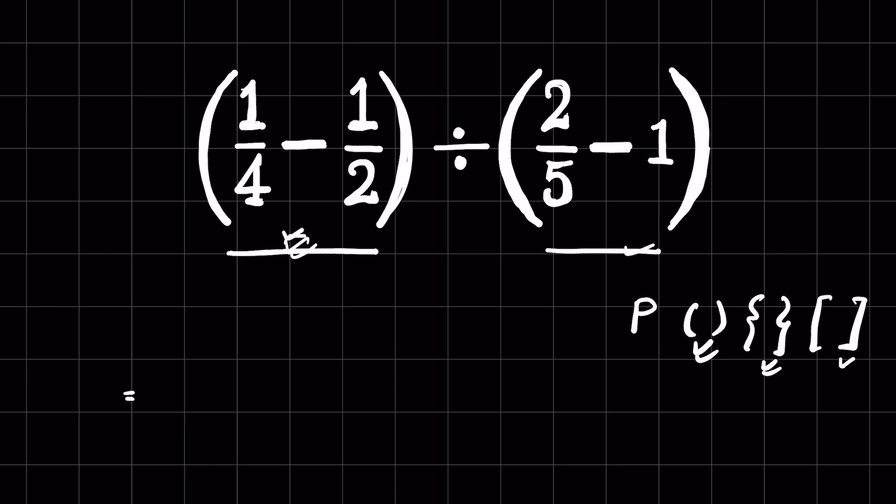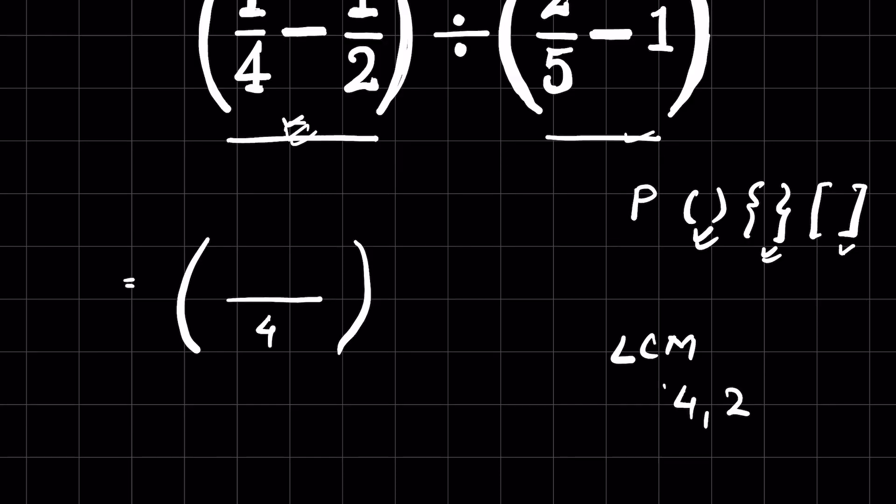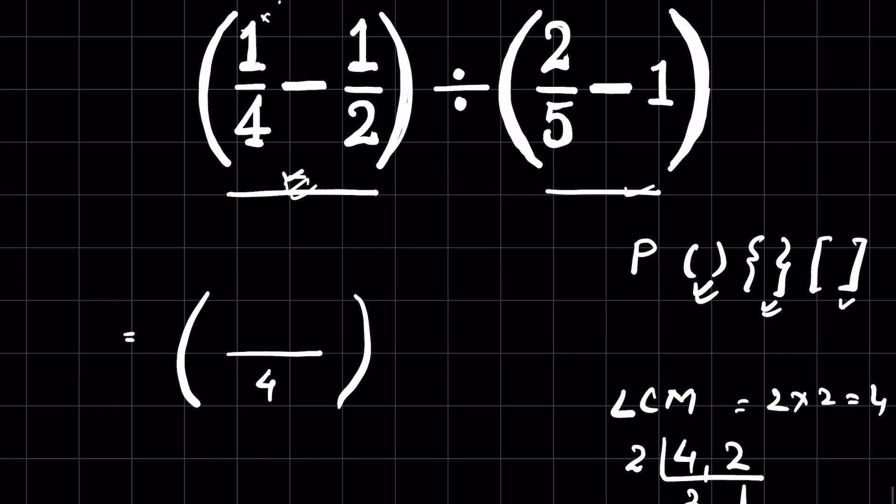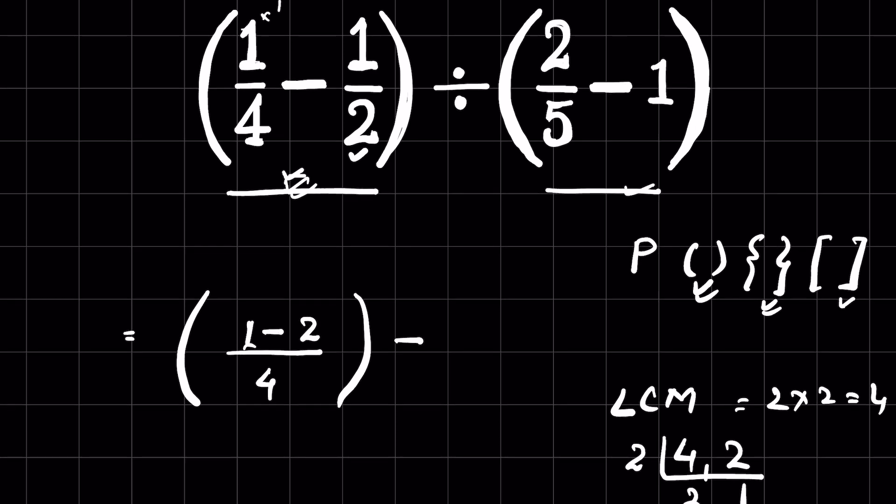This is a subtraction of fractions. We take LCM of the denominators to find a common denominator. LCM of 4 and 2 will be 4. How did we find the LCM? Divide both 4 and 2 by the same number, it's divisible by 2. 2 times 2 is 4 and 2 times 1 is 2. LCM is 2 times 2, that is 4. So write 4 here. Now 4 divided by 4 is 1, and 1 times 1 is 1. 1 minus, 4 divided by 2 is 2, and 2 times 1 is 2. This is done.